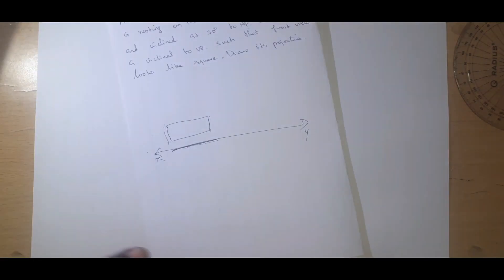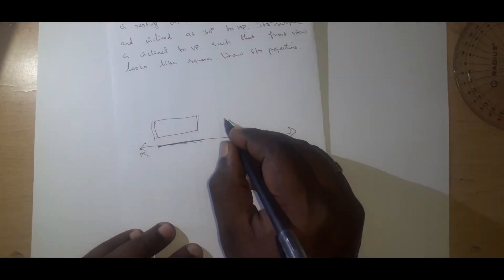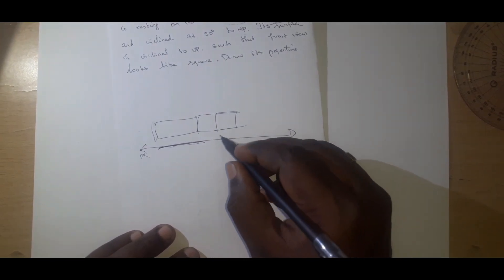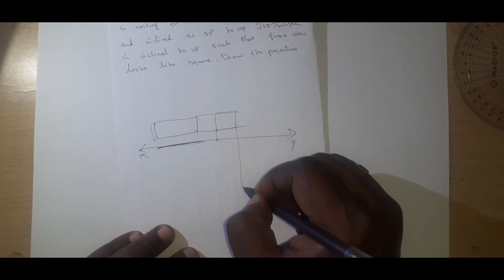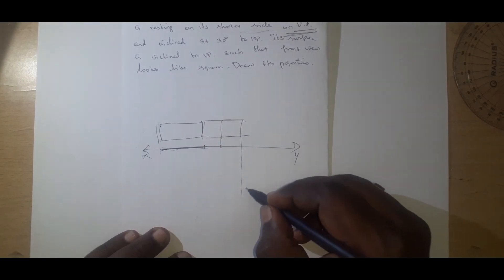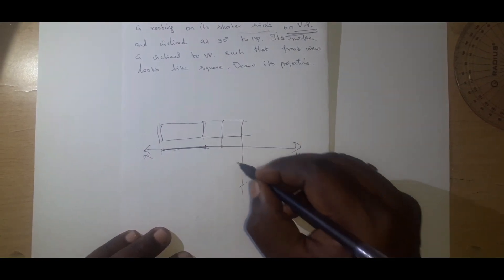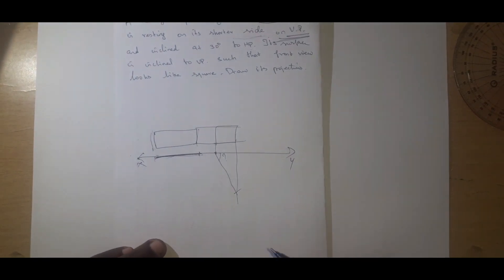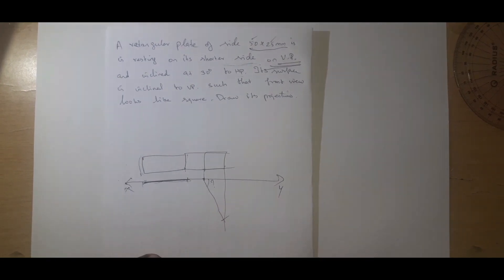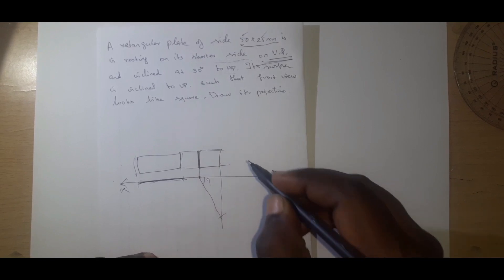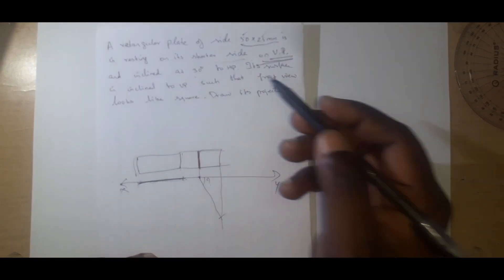We try to solve this now. The front view is marked as a square. While seeing from the top view it will be seen as a square. One end is known; the other end we are not knowing. By measuring with the compass, we measure the longer edge — 50mm — and mark it. This is the surface inclination. The resting edge is 30° inclined to HP.